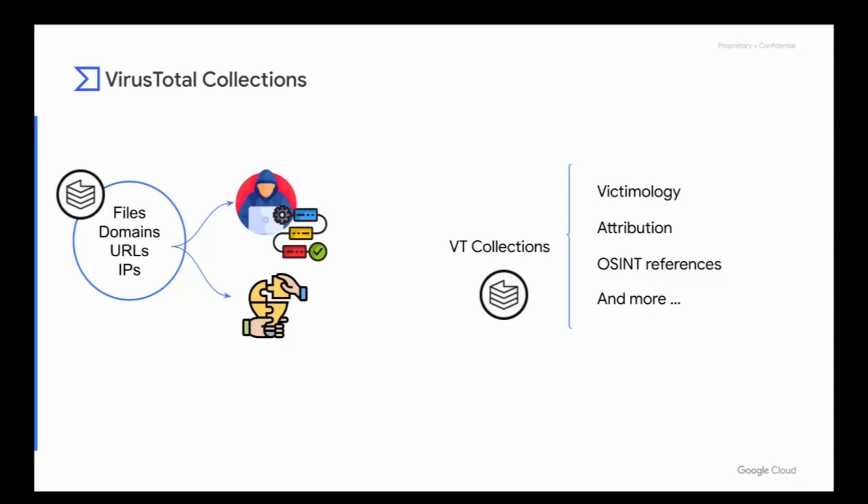So let's see what collections are. Some time ago we launched VT collections to allow users to organize their knowledge based mostly on IOCs. But VT has continued improving it because the idea is to extend collections boundaries from a simple set of IOCs to attacks, campaigns, and also to collaborative investigations. To do so we added new features such as victimology based on geography and industry, attribution to one or multiple threat actors, scene references, and much more.